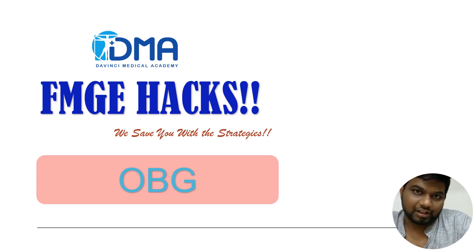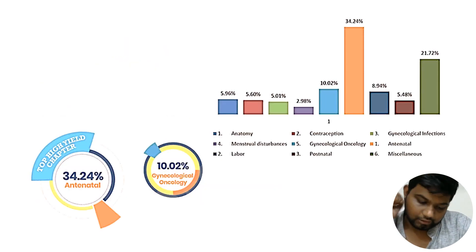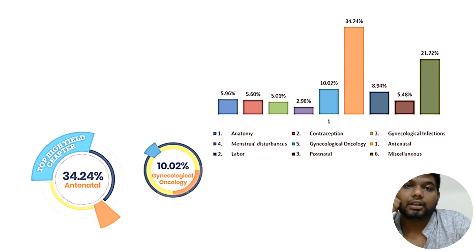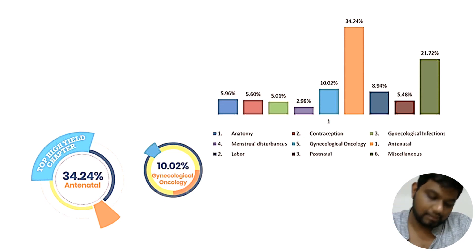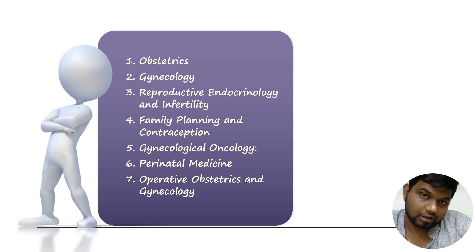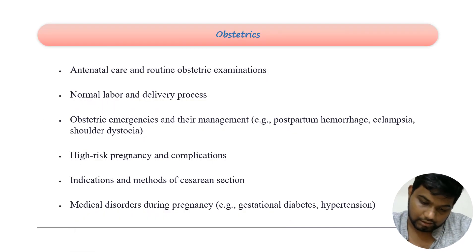Hello, good evening everybody. This is FMG Hacks and we are going to talk about OBG — obstetrics and gynecology. Speaking about obstetrics and gynecology, the very high-yield area is antenatal care and cancer gynae, which occupies almost 30% of your FMG questions, while the remaining 70% come from miscellaneous topics. We divided OBG into seven sections: obstetrics, gynecology, reproductive endocrinology, and infertility.